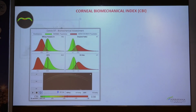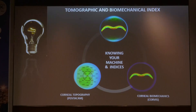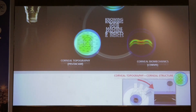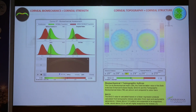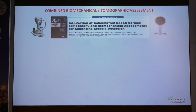The Corneal Biomechanical Index (CBI) is a logistic regression formula. If values are less than 0.25, it indicates low risk; between 0.25 and 0.5 indicates moderate risk; and more than 0.5 indicates high risk. The TBI incorporates both the tomographic and biomechanical index and is considered more sensitive and specific in diagnosing patients with suspected or frank ectasia.